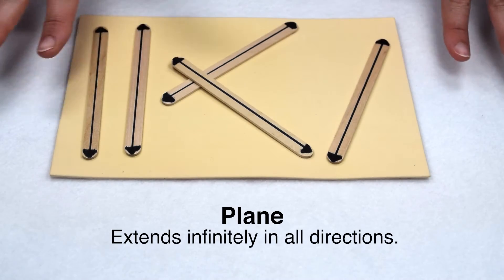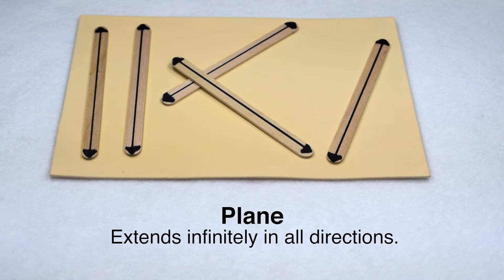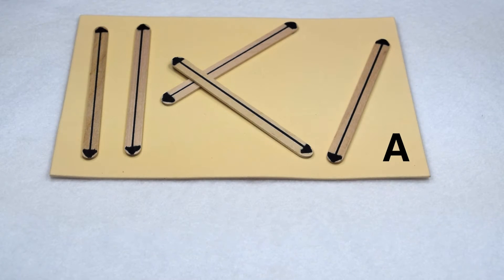A plane extends infinitely in all directions. It's two-dimensional, so it's flat and doesn't have any thickness. A plane can be labeled with a single letter. Therefore, we could refer to this as plane A.